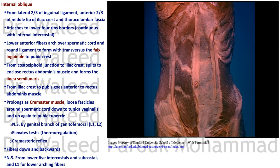This happens in cold weather — the testis must be pulled close to the warmer body. The optimum temperature for the testicles is about 27°C, below body temperature, which is why they are located in the scrotum away from the 37°C body. There is a reflex: rubbing on the medial side of the thigh sends an L1 afferent signal causing the cremaster to contract and pull up the testicle. This is the cremasteric reflex, used to examine L1.